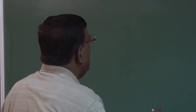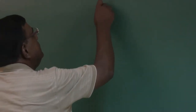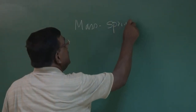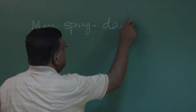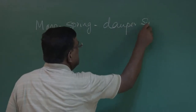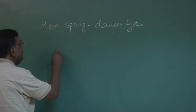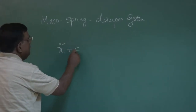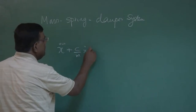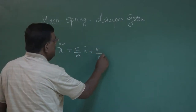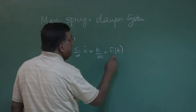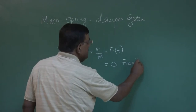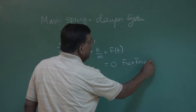When we talk about the mass-spring-damper system, we get an equation of this form: x-double-dot plus c/m times x-dot plus k/m equals f(t). But if it is a free response, the right-hand side is equal to zero.